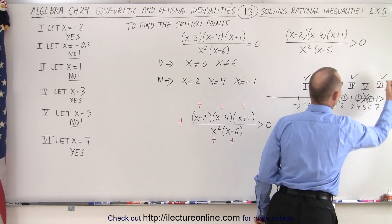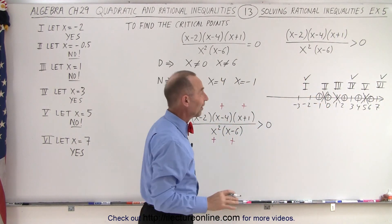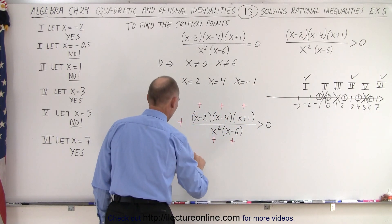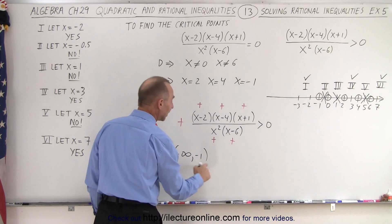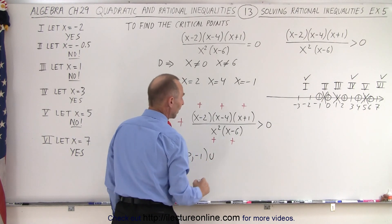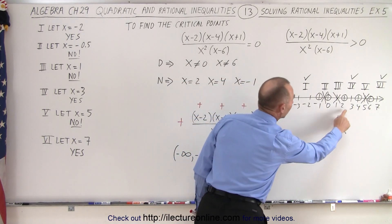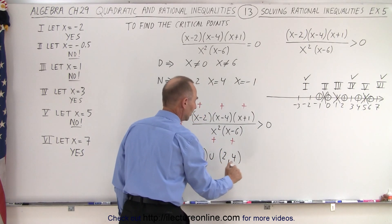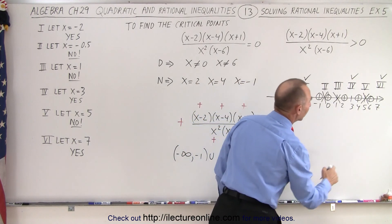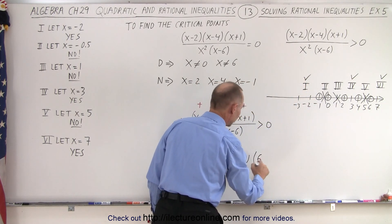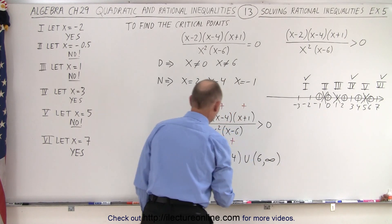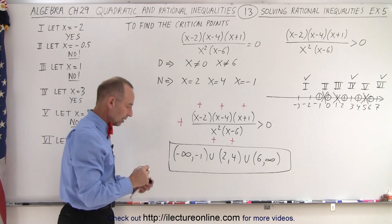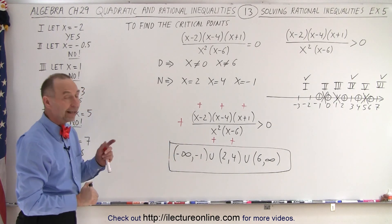We found three regions that satisfy the inequality. Everything to the left of negative one — from negative infinity to negative one, not inclusive. The region from two to four, not including the endpoints, so we use parentheses. And the region from six onward — starting from six, not including six, all the way to infinity. Those three regions all satisfy the inequality, and that is how it's done.